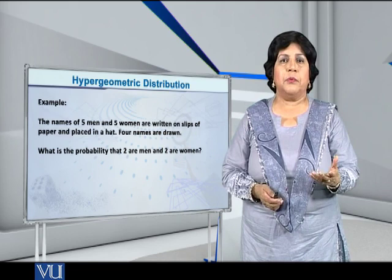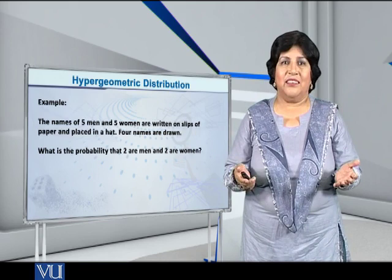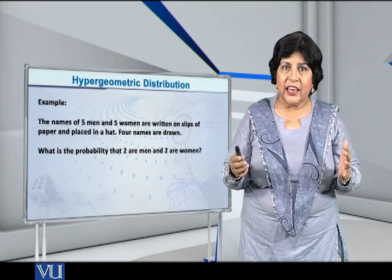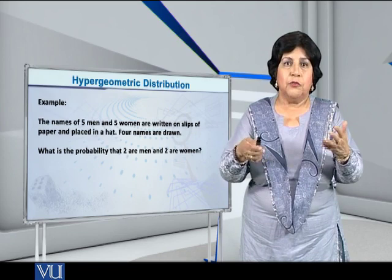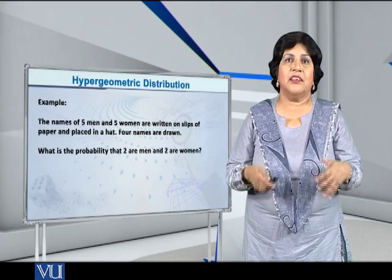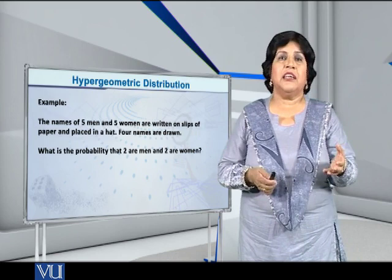The names of five men and five women are written on slips of paper and placed in a hat. Four names are drawn. Now, let's tell you what is the population. Obviously, five plus five, ten, which means five men and five women together, they constitute the population and capital N is equal to ten.